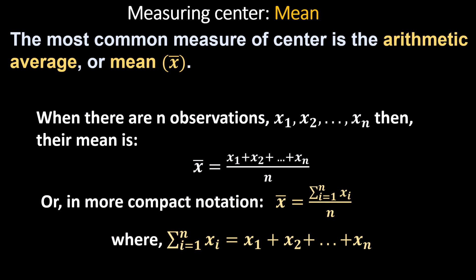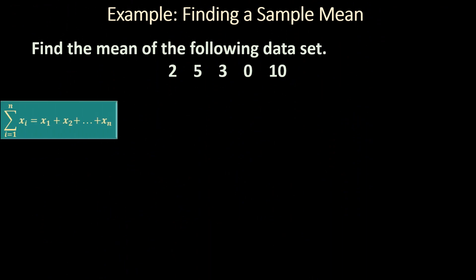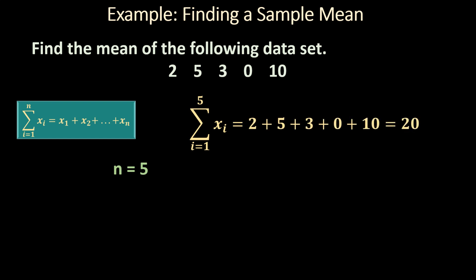Now let me explain some examples. First one: find the mean of the following dataset. Find the sum of these observations — that is, the sum from i equals 1 to n of x-sub-i. How many observations are there? There are 5 observations, so n equals 5. The summation of these observations is 20.